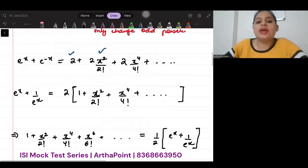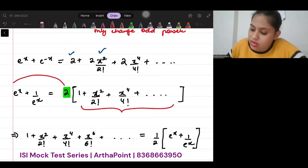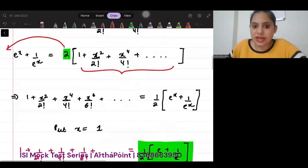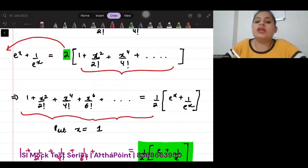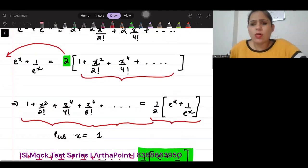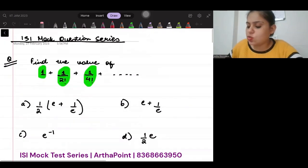Now, what I can do is I can take this two common. So, if I take this two common, then I am going to get this inside. And I can take this two on the other side. So, I will get that 1 plus x squared by 2 factorial plus x to the power 4 by 4 factorial and so on will be half e to the power x plus 1 by e to the power x.